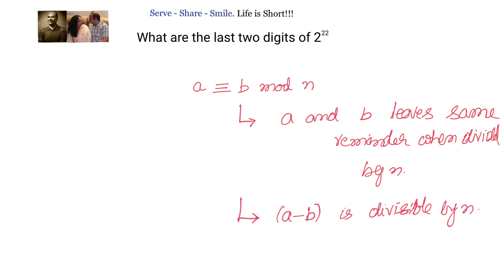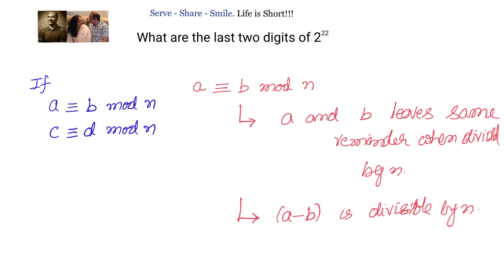Extending this concept, we have a couple of other formulas. The first formula is: if a and b are congruent modulo n, and c and d are congruent modulo n, then a times c and b times d are also congruent modulo n.